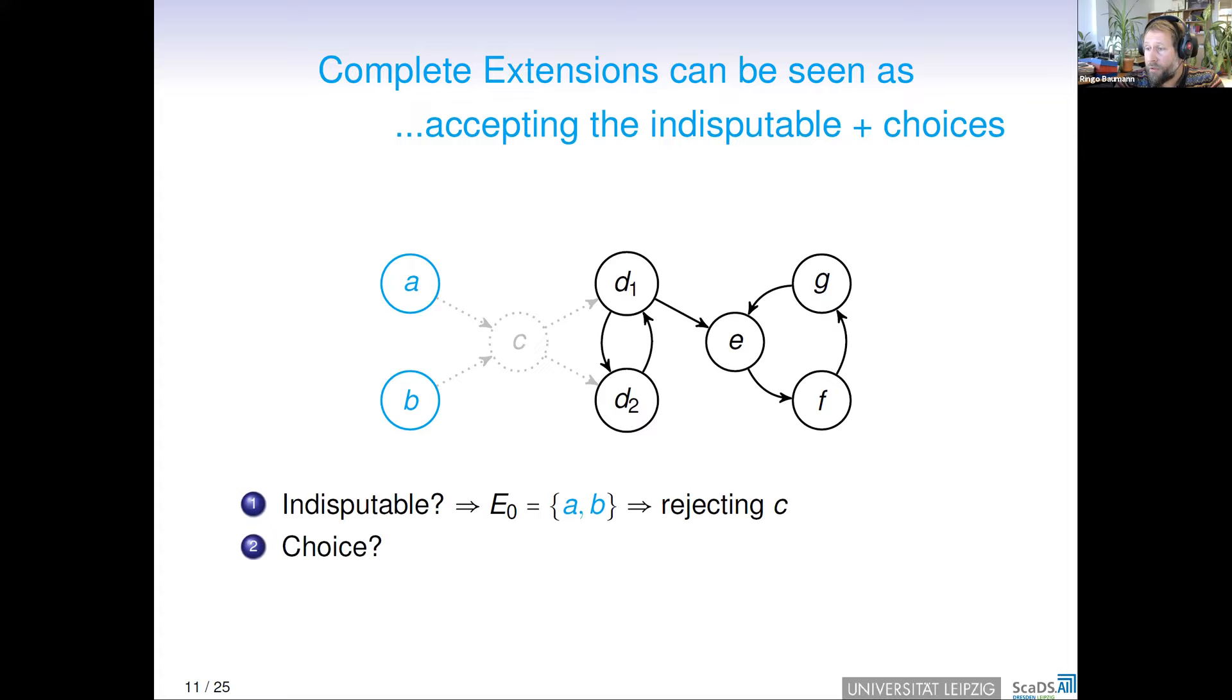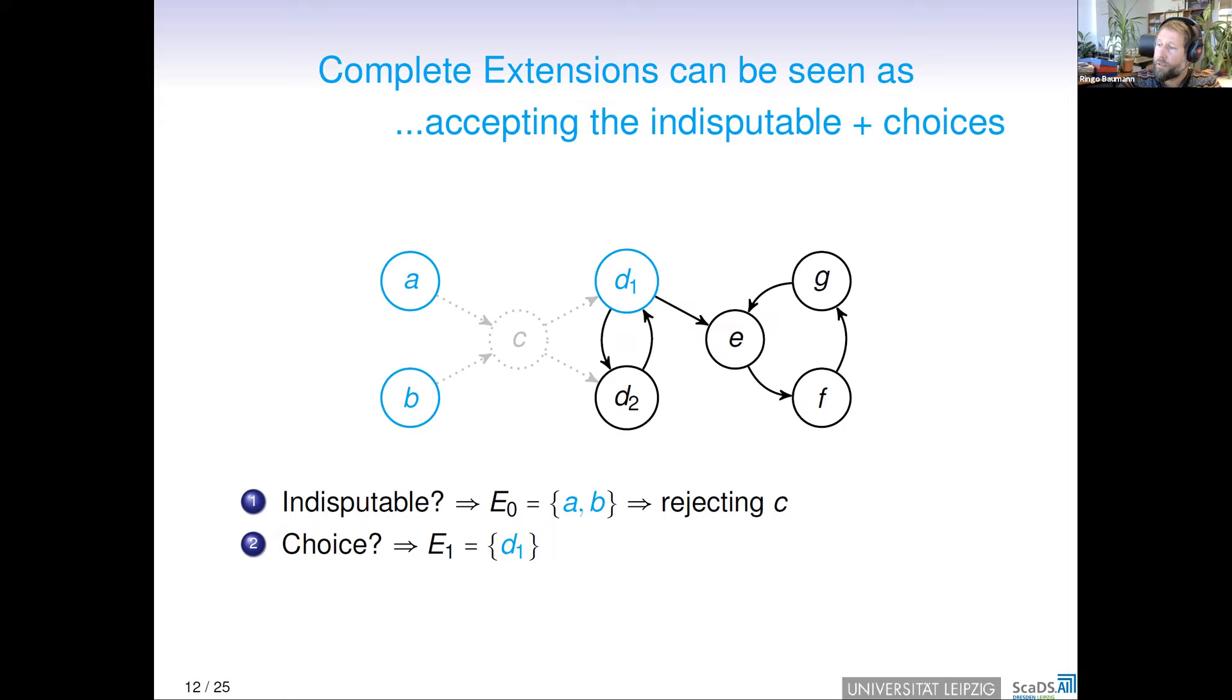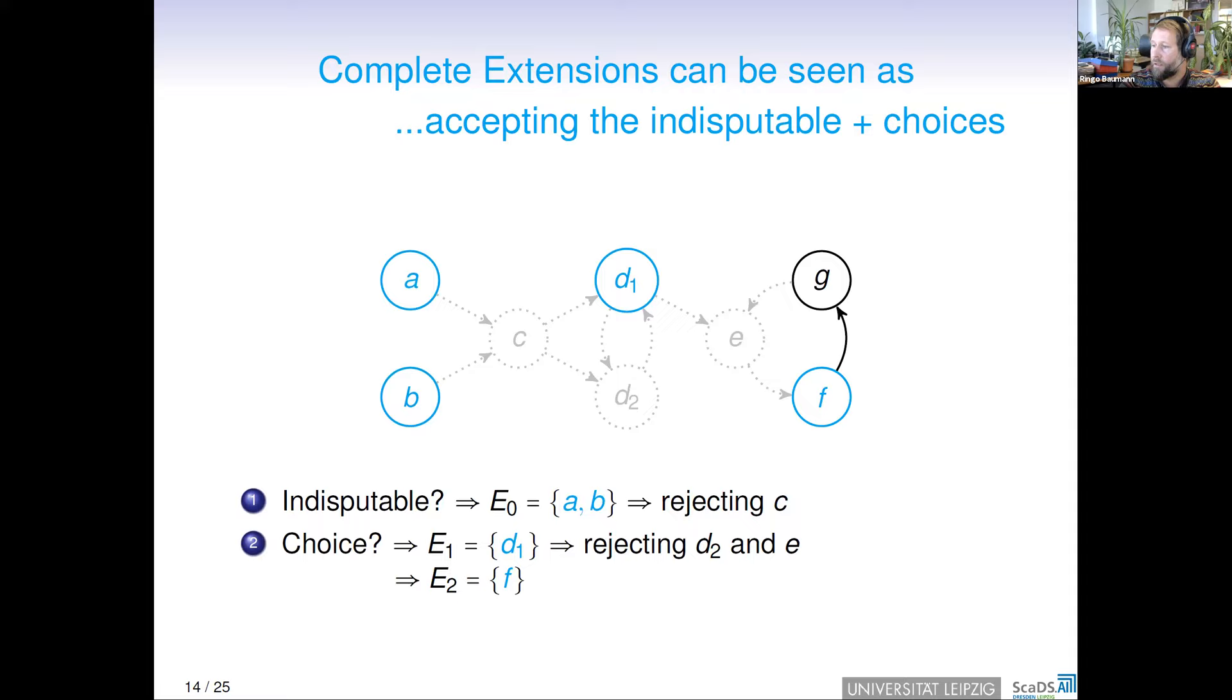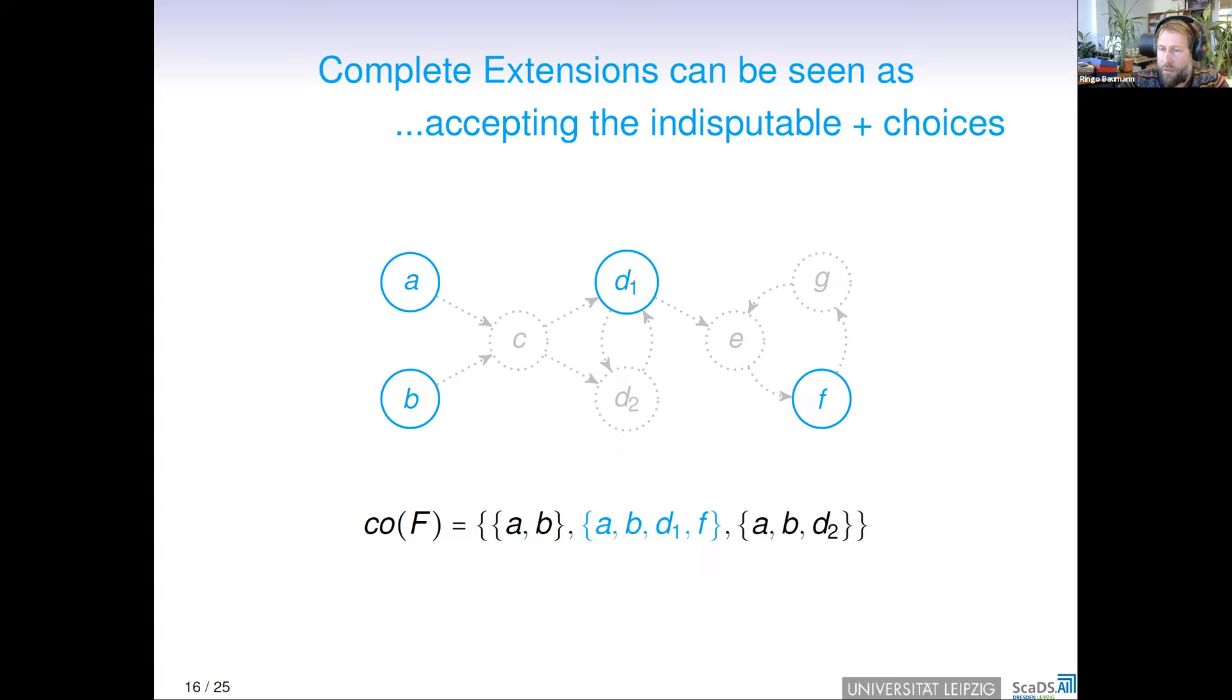Now in the next step, we are faced with a choice, either D1 or D2. Let us assume that D1 means let's go to dance tonight, and D2, let's go to the theater tonight. Here we have a choice, and let's say we go dance. So we choose D1, and this entails that we have to reject D2 as well as E, because they are attacked by D1. Finally, we have no problem with accepting F, because it is unattacked, and accepting F yields rejecting G. In this way, we can reconstruct the complete extension A, B, D1, and F.